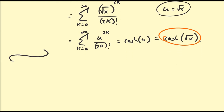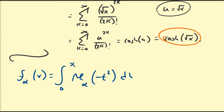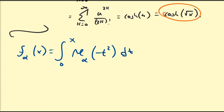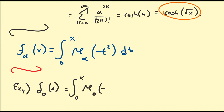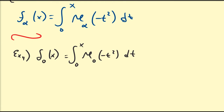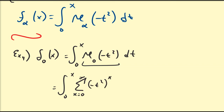Now let's take integrals of the Mittag-Leffler function. Define f_alpha(x) to be equal to the integral from 0 to x of E_alpha evaluated at minus t squared, dt. The reason for evaluating at minus t squared should become clear in a moment. Let's work out f_0(x): that's the integral from 0 to x of E_0(-t²) dt, which using the power series equals the integral from 0 to x of the sum from k equals zero to infinity of (-t²)^k dt.